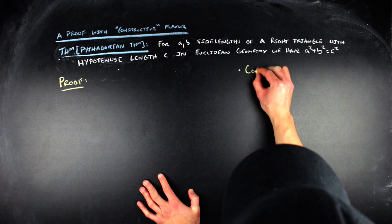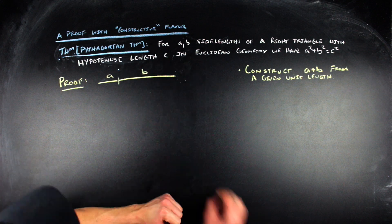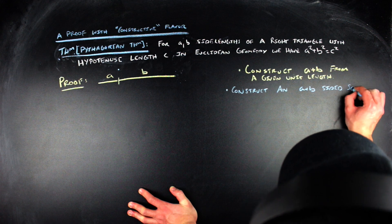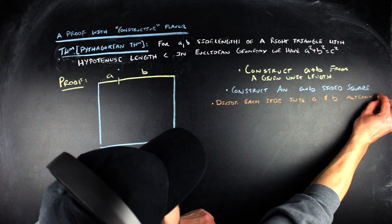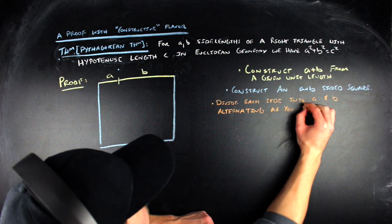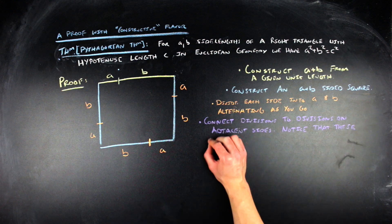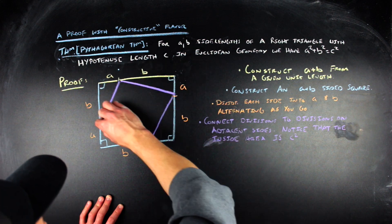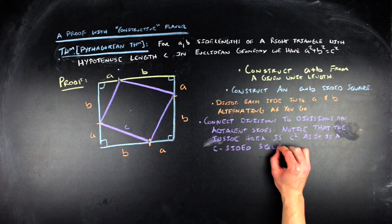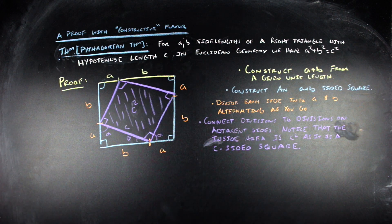To prove this constructively, I'm going to do a geometric construction. From some given unit length, we construct the length a + b. We then use that length a + b to build a square with sides of length a + b. We divide each side alternating a's and b's - so a, b, a, b as you walk around the outside of the square. Once you've divided the square in this alternating fashion, you connect division points with the division points on adjacent sides. This constructs four right triangles, all with sides of length a and b and hypotenuse of length c.